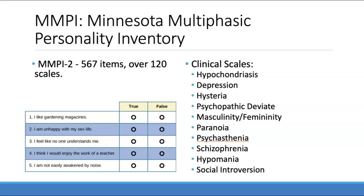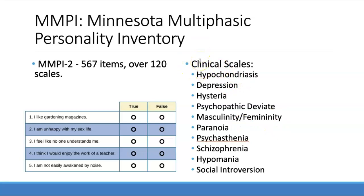To give an example of what the scales look like, the MMPI has 10 clinical scales measuring clinical features. The specific meanings of each scale won't be tested on the exam, but if you're interested, you can look up the clinical scales of the MMPI to learn what each term means.